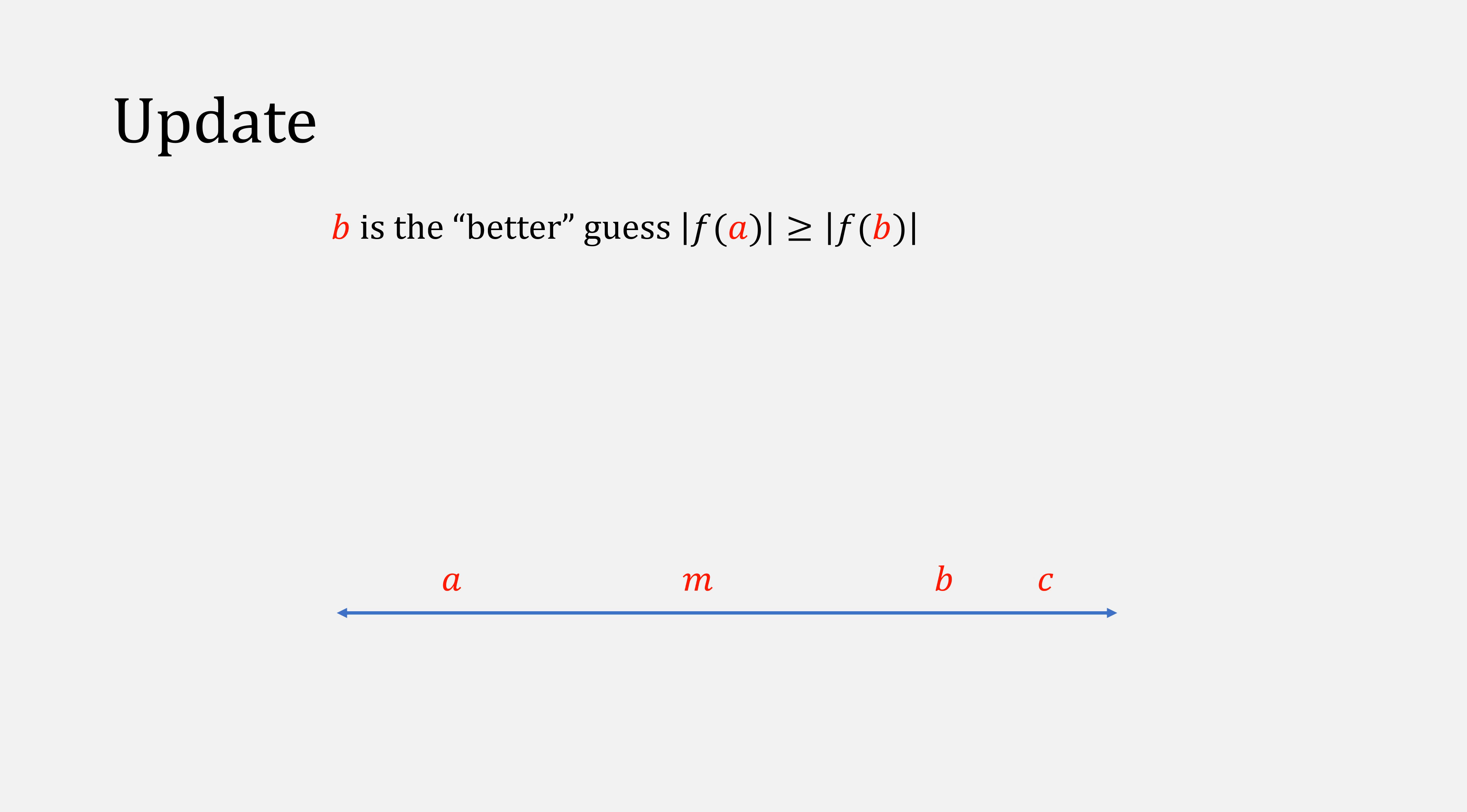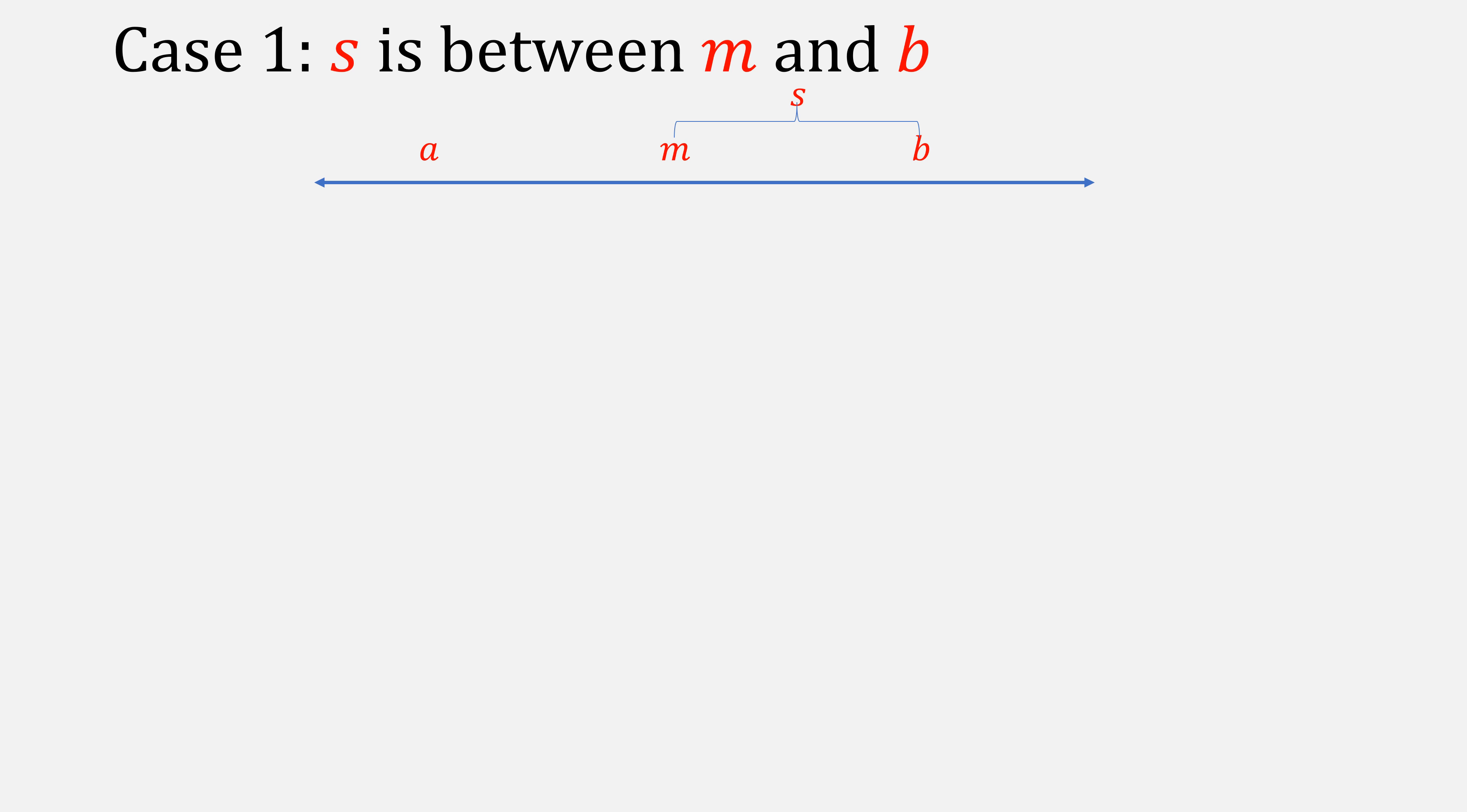Let's use this number line. Remember that b is our better guess, meaning that f(a) is larger than f(b) in absolute value, and that c is our old value b, meaning we expect f(b) to be smaller than f(c). Our new b will be dependent on where s falls on this number line. Our first case is that s is between m and b, meaning it's somewhere here or somewhere here. When this is the case, we do secant method. Our new b will be the value of s.